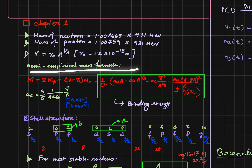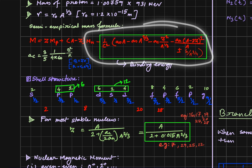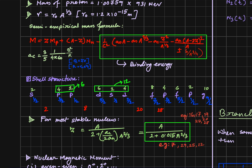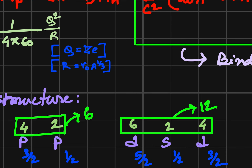From the semi-empirical mass formula, we can determine the mass of any nucleus, which is the mass of proton plus total mass of neutron minus the binding energy. Binding energy has important terms: volume term, surface term, Coulomb term, asymmetry term, and delta. The term worth remembering is the Coulomb term, which is (3/5) × (1/4πε₀) × Q²/R, where Q is ZE and R is R₀ × A^(1/3).